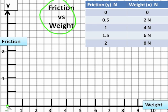I've put zero-zero as a point. If there's no friction, there's no weight. No weight, no friction. And at 2 newtons, it's 0.5. And at 4 newtons, it is 1, so we'll put our little dot there.